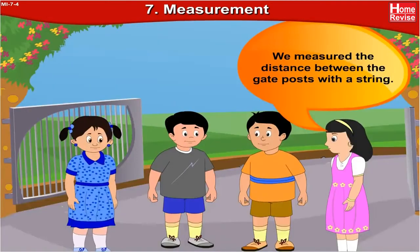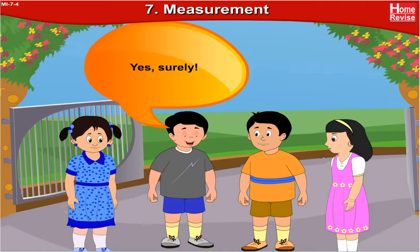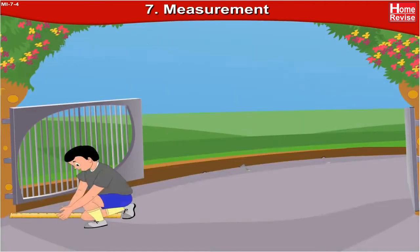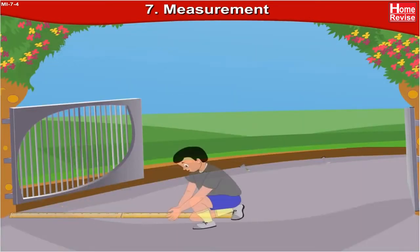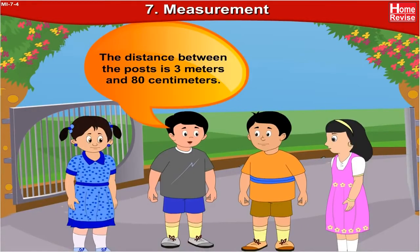We measured the distance between the gate posts with a string. Now let's use this meter scale and measure it again in meters and centimeters. This distance between the posts is 3 meters and 80 centimeters.